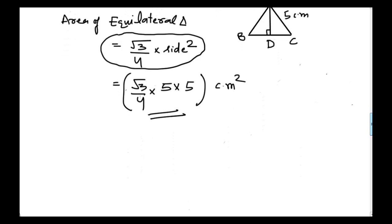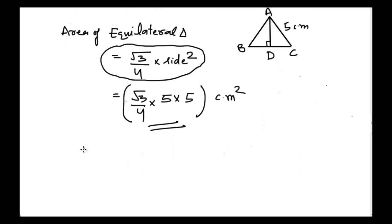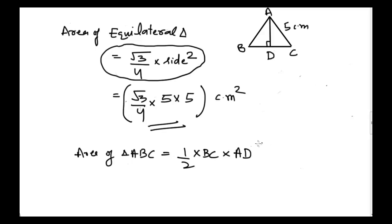We also know that the area of triangle ABC is equal to 1/2 times BC times AD, because the area of a triangle is equal to half times base into height. The base is BC and AD is the height of the triangle — I have just drawn a perpendicular to side BC, so AD would be the height of the triangle.